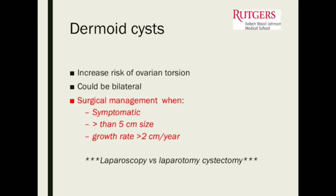Dermoid cysts, when they get large enough — usually above 5 centimeters — are the ones that tend to torse. They're at increased risk for torsion at a certain size. They could be bilateral. We operate on them when a patient becomes symptomatic, when they start to become large, or when they're growing faster than what a benign dermoid should — about two millimeters per year.